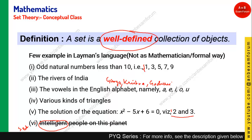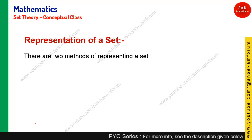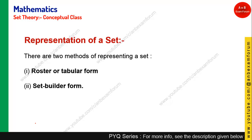Coming to the representation of sets — how can you represent a set? This is very important in set theory. There are basically two methods used to represent a set: the first one is the Roster Form or Tabular Form, and the second one is the Set Builder Form. In the upcoming slides we are going to see both representations.